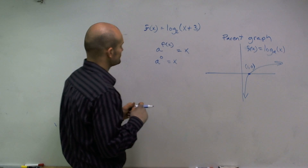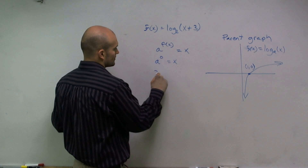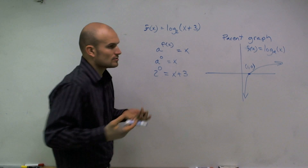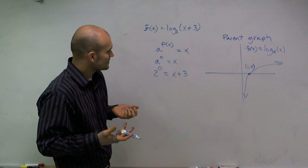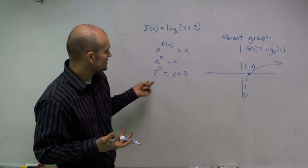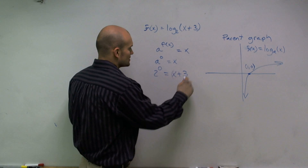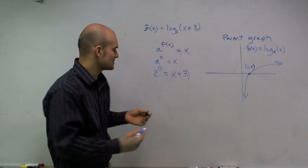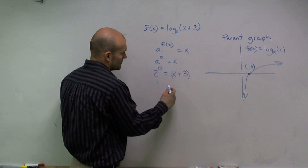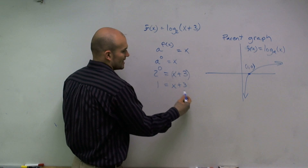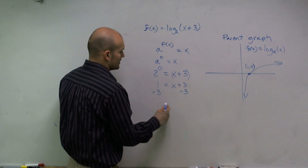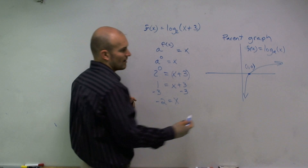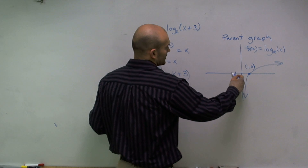So if I look at this graph, what I have is 2 raised to the 0 equals x plus 3. So essentially, 2 to the 0 equals x plus 3. If I want to find my new x-intercept, well, 2 to the 0 is 1, so 1 equals x plus 3. Then I subtract 3, and I get negative 2 equals x, which tells me my new x-intercept is now at negative 2. So I'll go over 1, 2 units.